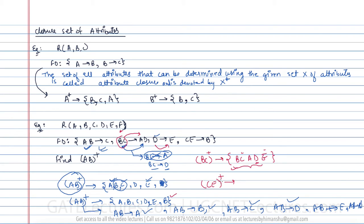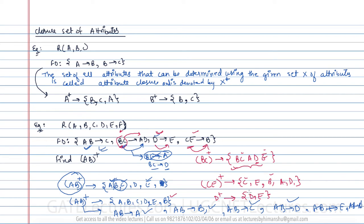For CE closure: with C I determine C, with E I determine E. From CE→B, I can add B. Now with BC I can determine AD. With AD, I can determine E, which is already there. We still cannot determine F. Now for D closure: with D I determine D and E. To use CE→B we would need C, but we only have D and E, so D closure is {D, E} only.